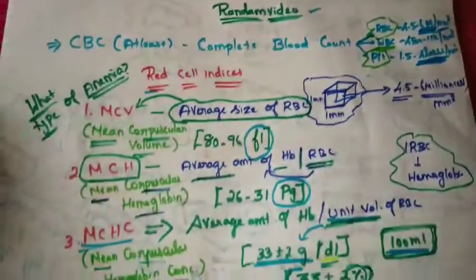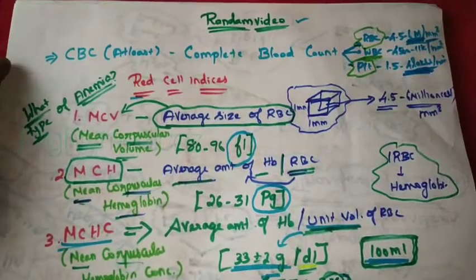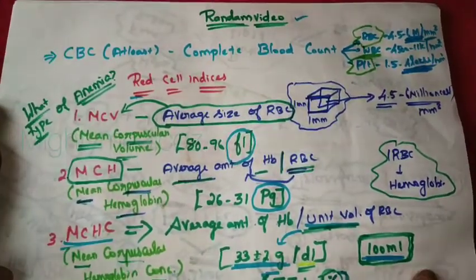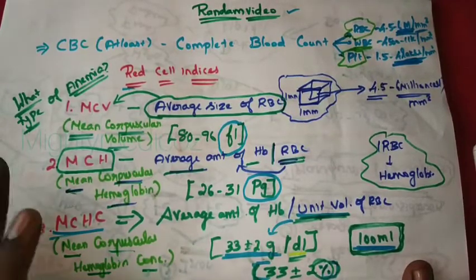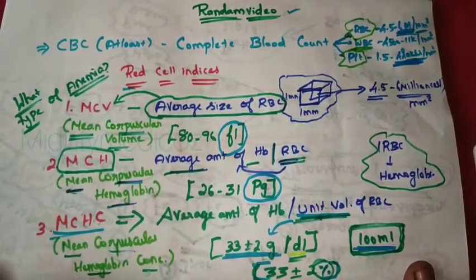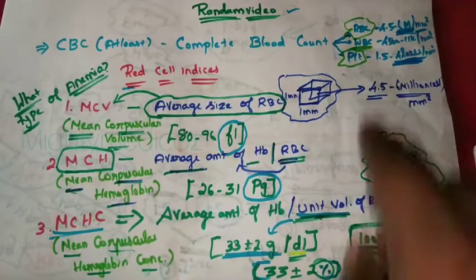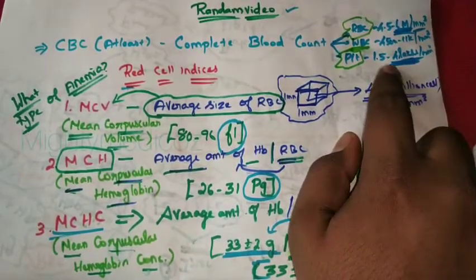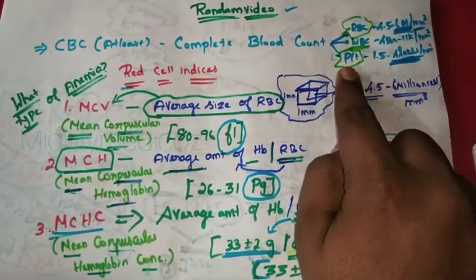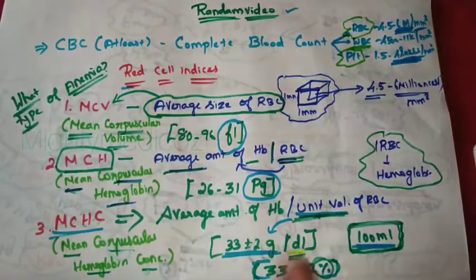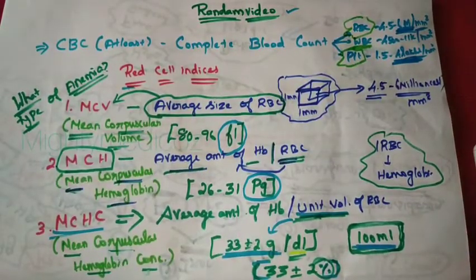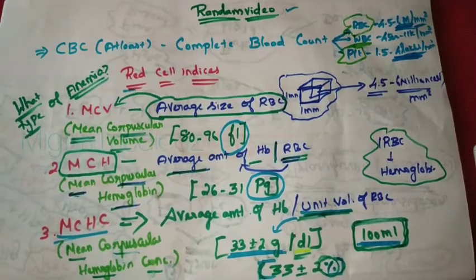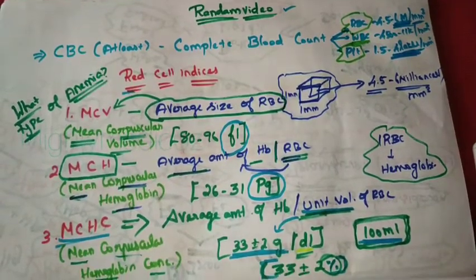This video is useful for practical viva in hematology and physiology. Today's video covered MCV, MCH, MCHC, and a quick overview of WBC, RBC, and platelet counts. Please share, subscribe, and comment. Thank you.